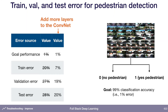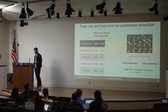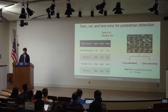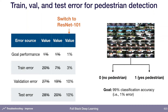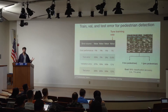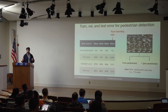Let's walk through an example. Our goal performance was 1% and our training error was 20%, which is terrible. The first thing we might do is add more layers to the conv net — that could get us to 7% error. Then we might switch to a ResNet, closer to a state-of-the-art architecture, which could get training error down to 3%. Then we tune the learning rate, and let's say that gets us below our target error of 1%. Now the big glaring problem is a huge gap between training error and validation error — we're massively overfitting.